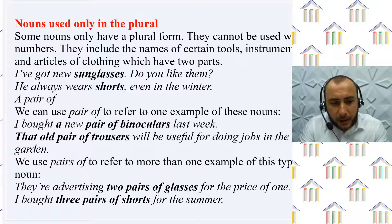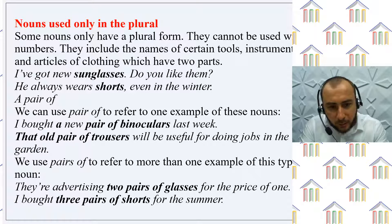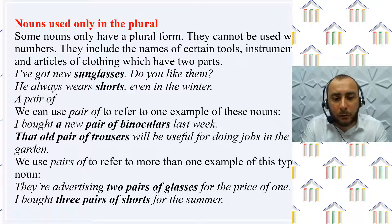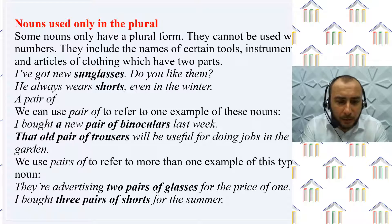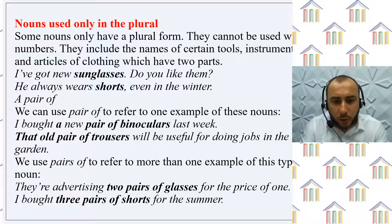A pair of: we can use 'a pair of' to refer to one example of these nouns. "I bought a new pair of binoculars last week." "That old pair of trousers will be useful for doing jobs in the garden." We use 'pairs of' to refer to more than one example of this type of noun. "They are advertising two pairs of glasses for the price of one." "I bought three pairs of shorts for the summer."